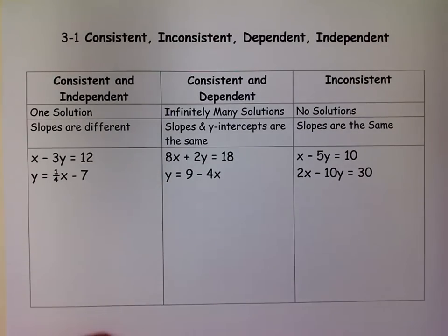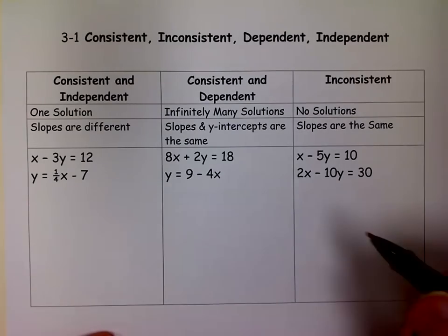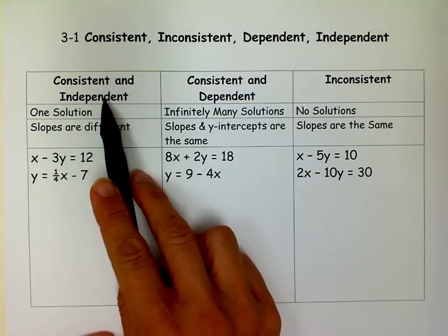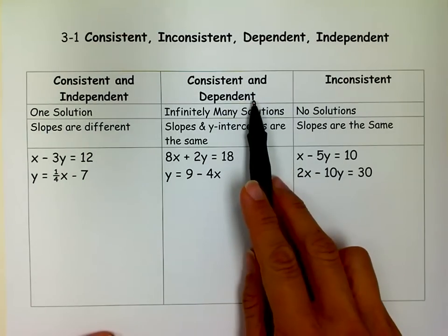A lot of times when you're solving these systems from a textbook, they'll ask you not only to solve them, but to figure out if they're one of those things. So these are the only three options. They can be consistent and independent, or consistent and dependent.